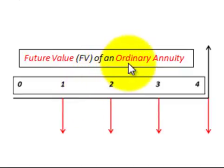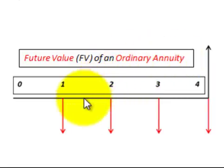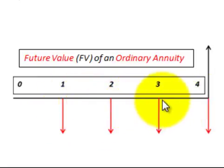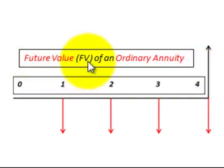Moving on, we're going to focus on the future value of an ordinary annuity. The key here is ordinary annuity. Again, what we have here are four equal payments and they're at the end of each year. We discount those forward to determine their future value and we use the terminology future value of an ordinary annuity.